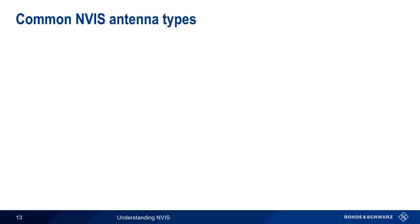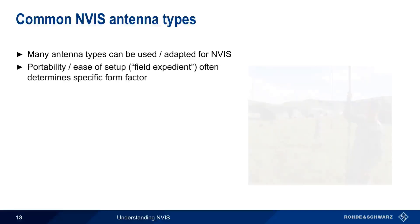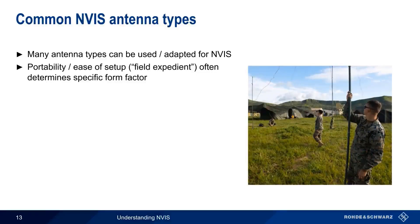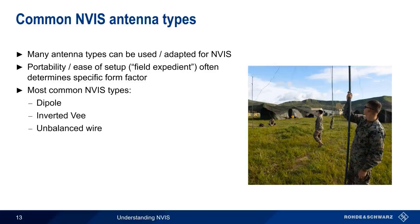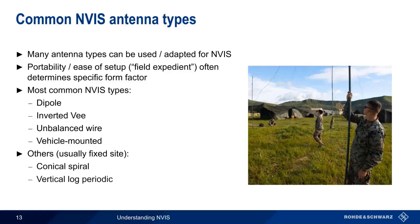NVIS describes a certain type of antenna, or more precisely, a certain radiation pattern or elevation angle produced by an antenna. There are however many different types of antennas that can be used or adapted to produce the typical NVIS antenna pattern. Given the most common applications of NVIS, so-called field expedient antennas, that is, antennas which are designed for portability and ease of setup, are often preferred. The most common types of antennas found in NVIS applications are dipoles and inverted Vs, which are a variant of the standard horizontal dipole. Unbalanced wire antennas are also used in NVIS. And there are also a number of different types of vehicle-mounted antennas. We'll discuss all of these shortly. Other types of antennas found are fixed-site applications, where low-profile, portability, and or ease of setup are less of a concern. These include conical spiral and vertical log periodic antennas.